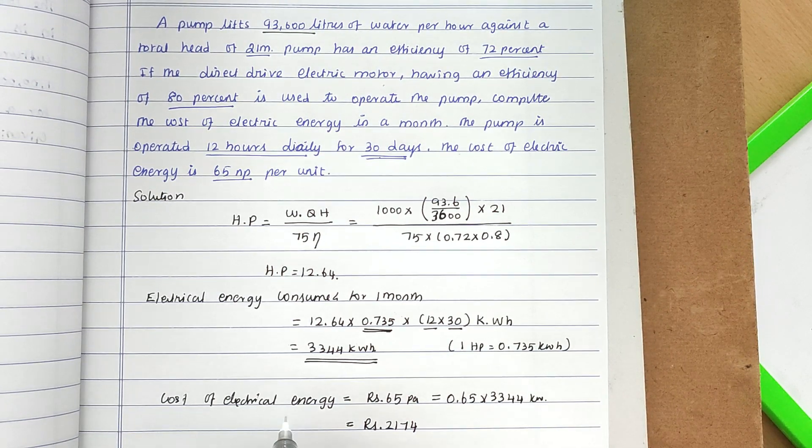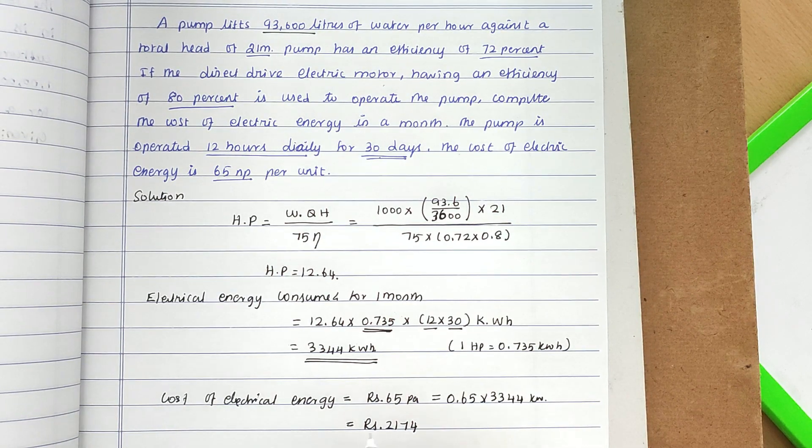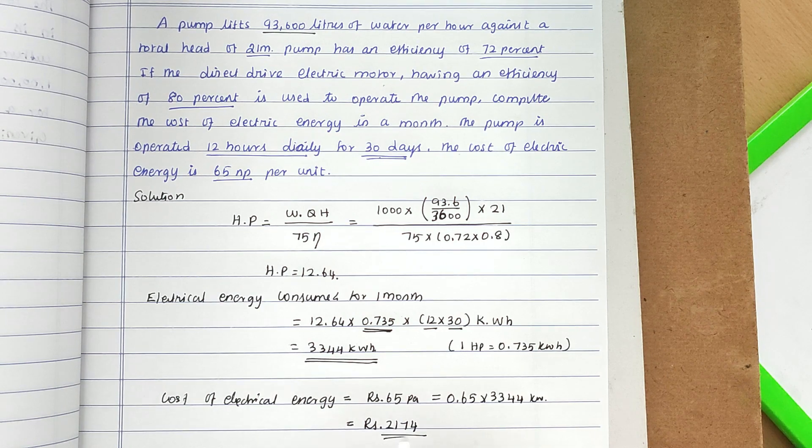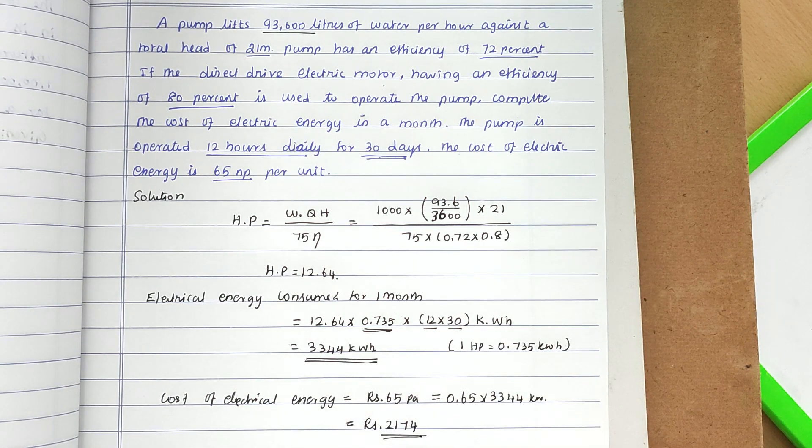The cost of electrical energy per month is 2174 rupees. This is the method we can solve the problem. We'll see you in the next video. Thank you.